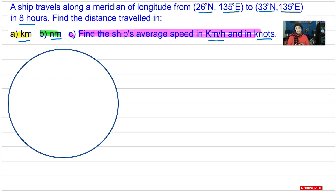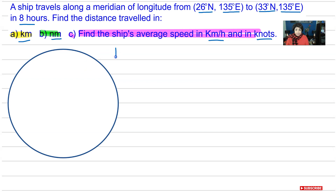We are travelling along the same longitude, which means we're travelling along the surface of the Earth. We also have the radius of the Earth — a great circle has the radius of the Earth. The radius of the Earth is roughly 6,370 kilometres.